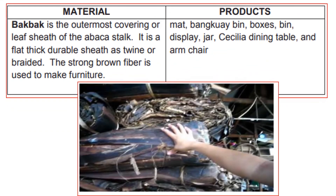Another material is bakbak. It is the outermost covering or leaf sheath of the abaca stalk. It is a flat, thick, durable sheath used as twine or braided. The strong brown fiber is used to make furniture. Products include mats, bangkuway bins, boxes, display jars, and dining tables and armchairs.